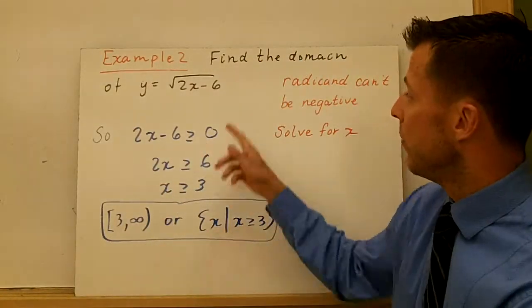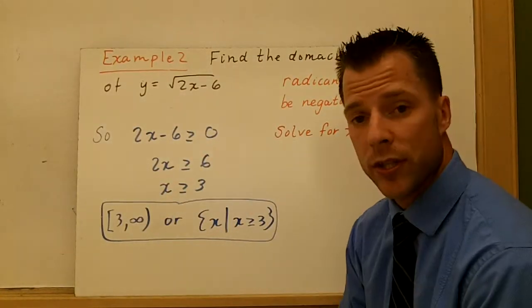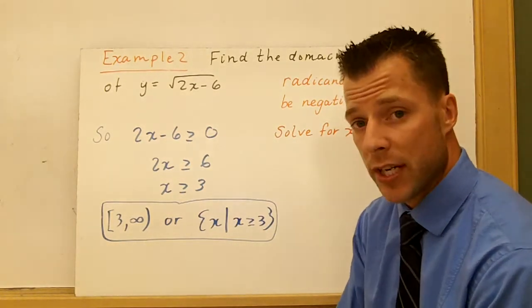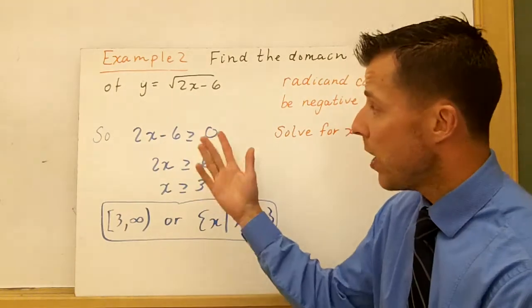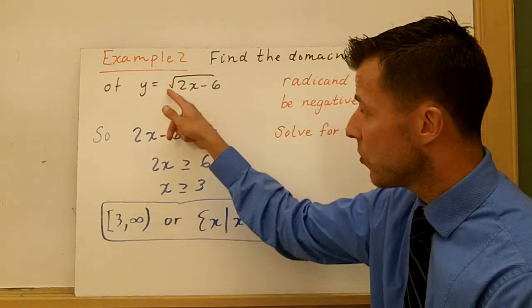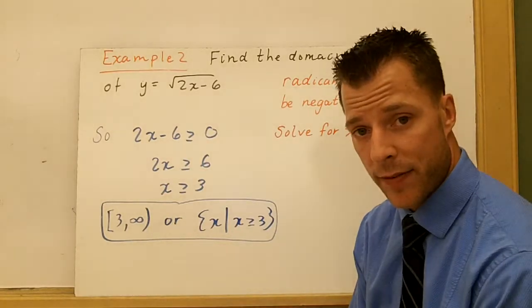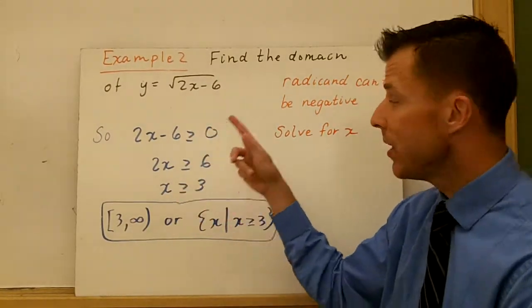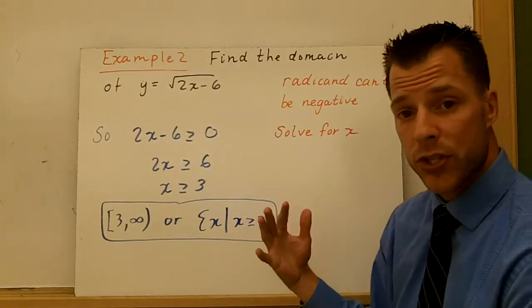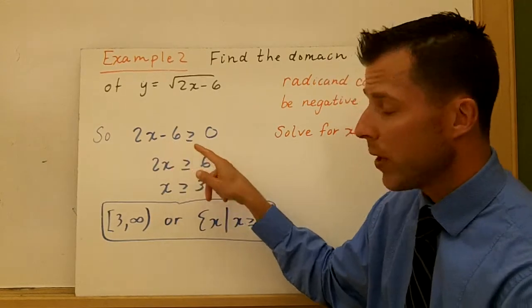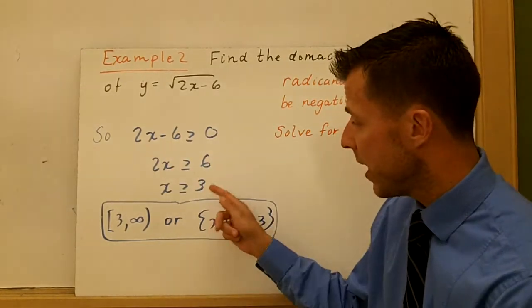In example 2 now, find the domain of this equation. There's no context given. So now I have to pick the largest set of real numbers in which y is defined. Now I see the radical here, and I know the square root can't be negative. So what's underneath here, the radicand has to be greater than or equal to zero. So that's what I do. So I set what's the radicand greater than or equal to zero, and I solve for x.